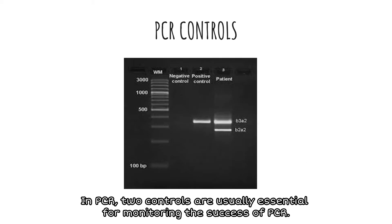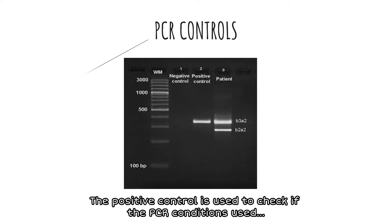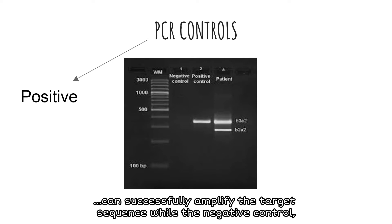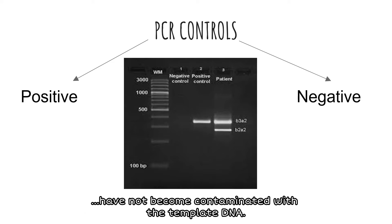In PCR, two controls are usually essential for monitoring the success of PCR. The positive control is used to check if the PCR conditions used can successfully amplify the target sequence, while the negative control, which contains no template DNA, is used to ensure that the solutions used for PCR have not become contaminated with template DNA.